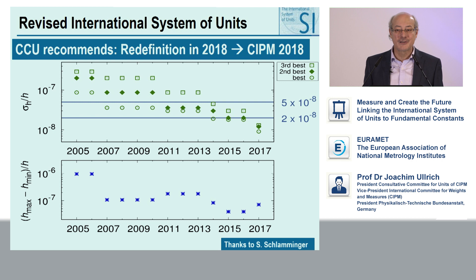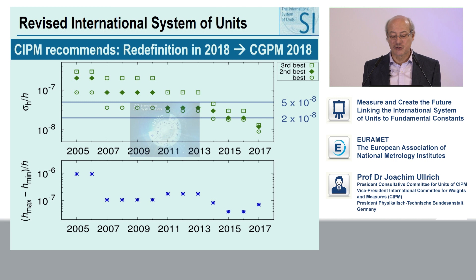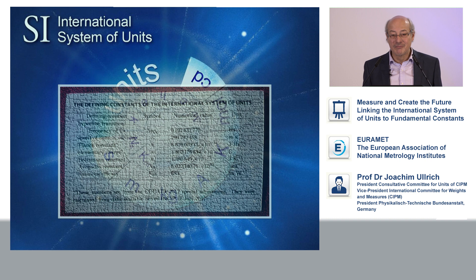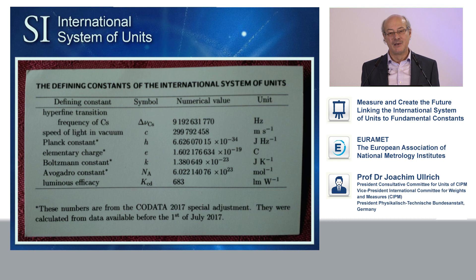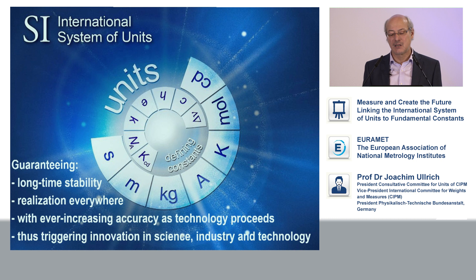After a long discussion in the CIPM, they came to the same decision. The CIPM recommends to the CGPM — the General Conference taking place in 2018 — that we should go ahead with the redefinition. By that, we will have graved in stone the numerical values of these defining constants, among them the fundamental constants of nature — fixed forever. There's no need to change them anymore. This system now guarantees long-time stability, realization everywhere, with ever-increasing accuracy as technology proceeds, thus triggering innovation in science, industry, and technology.